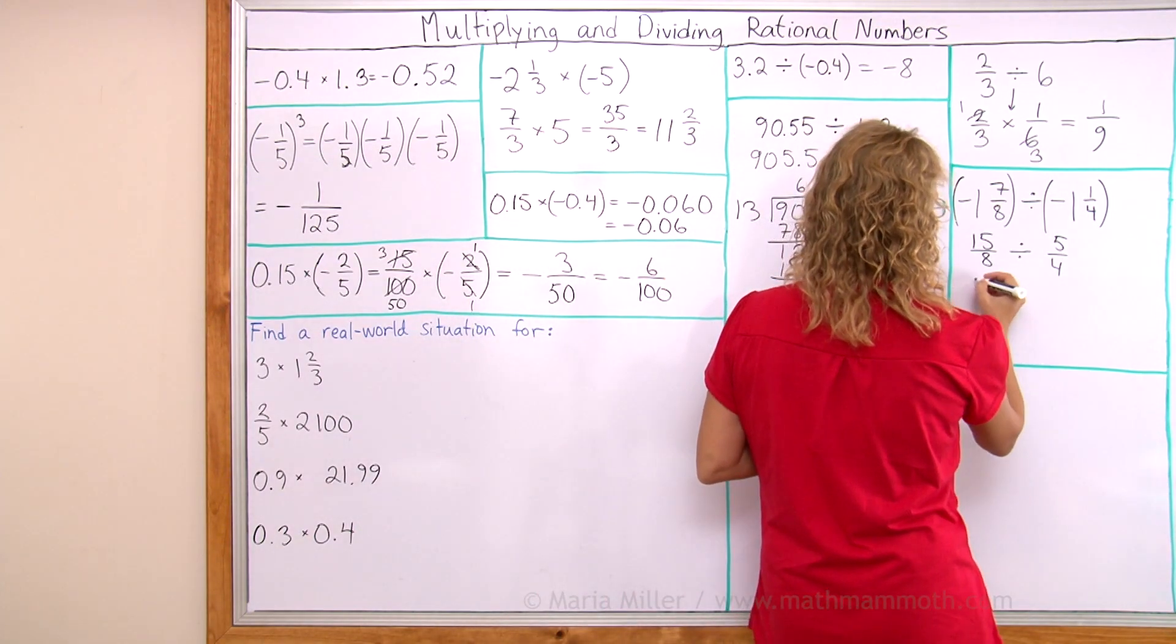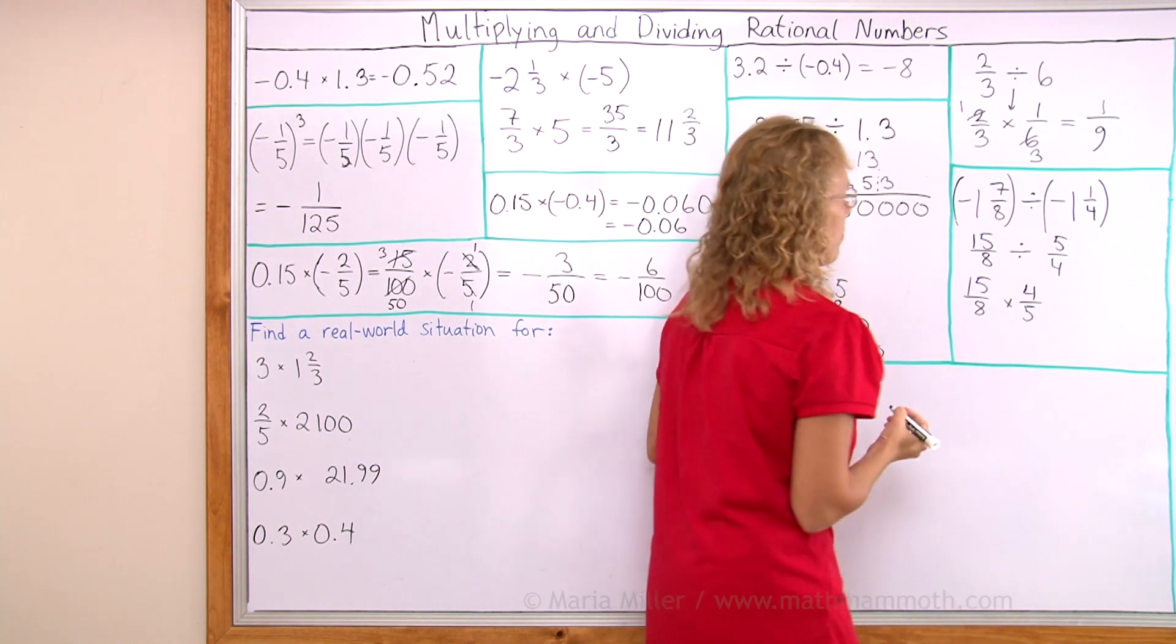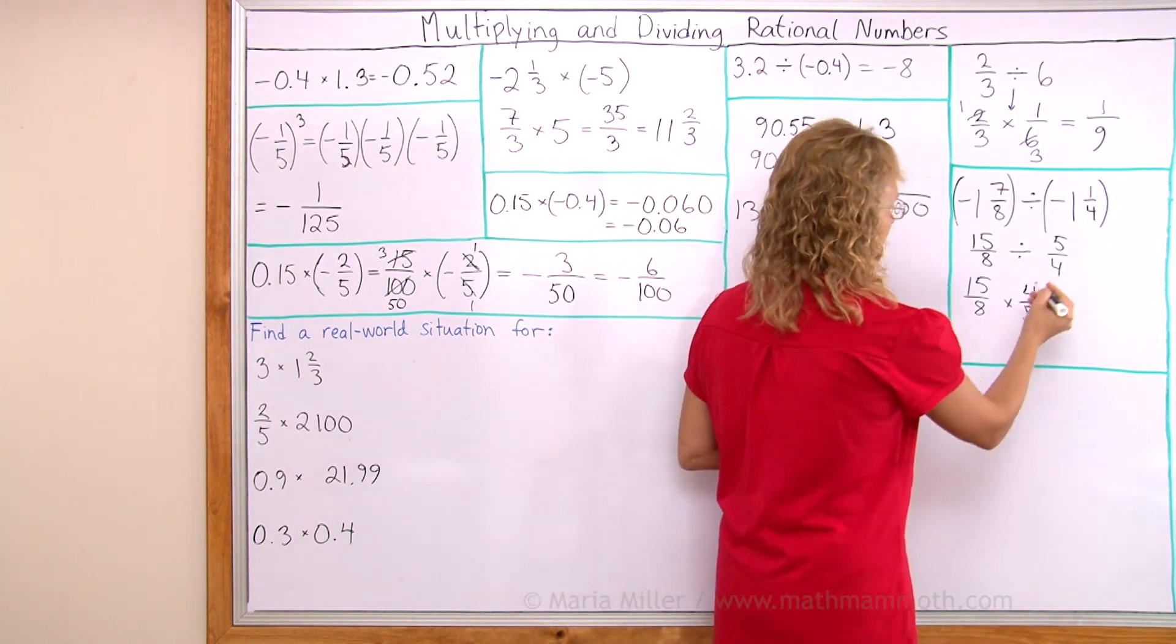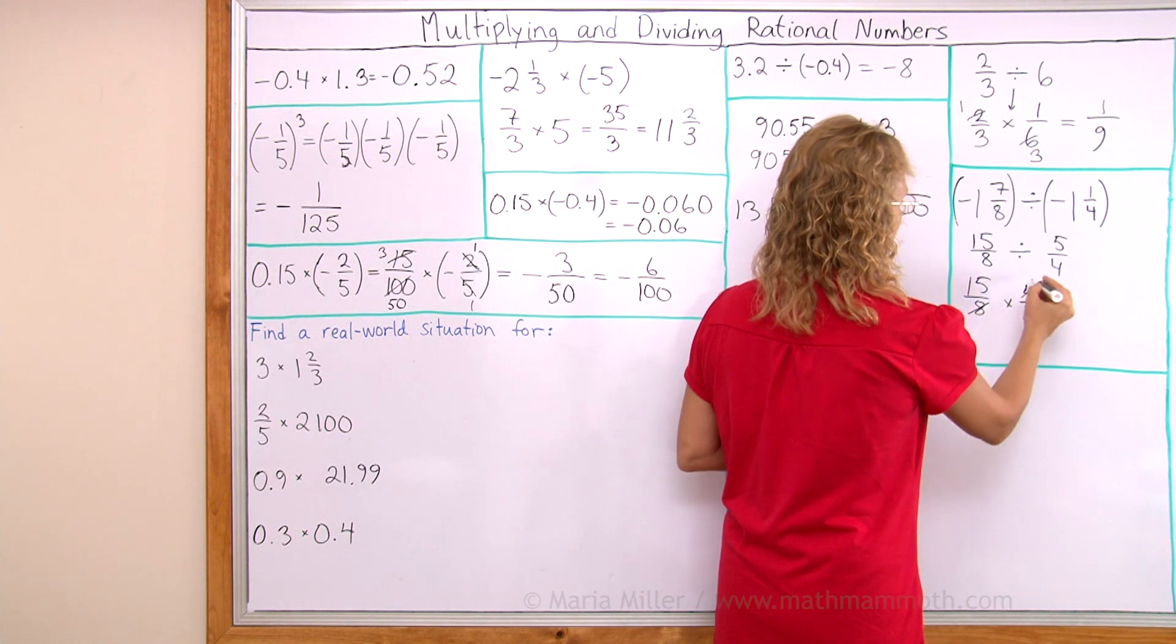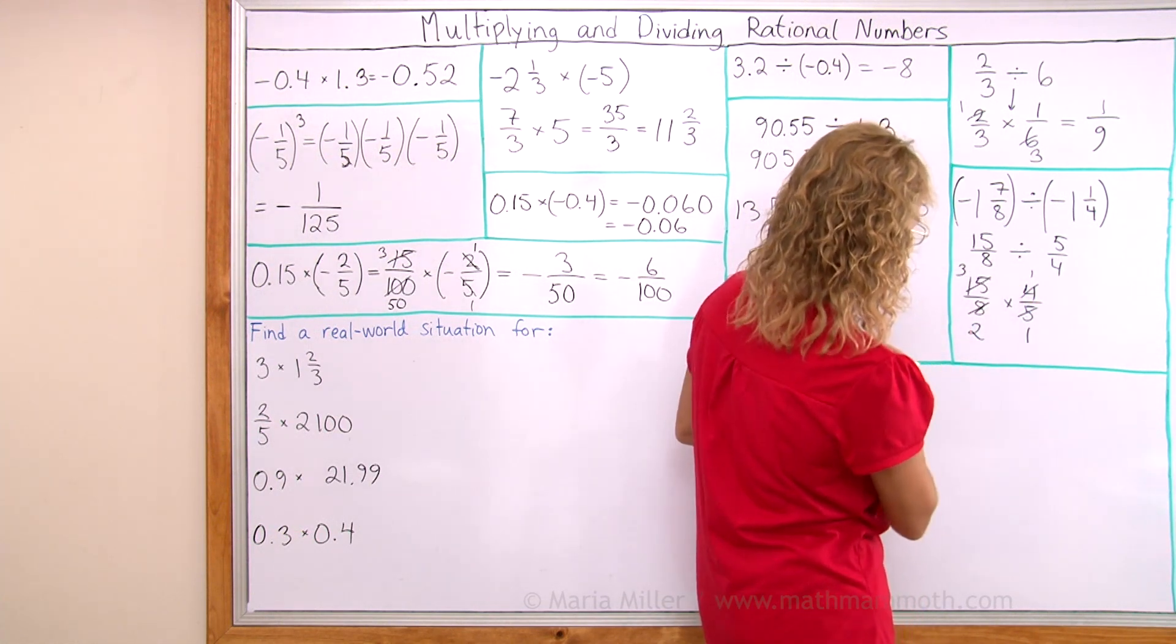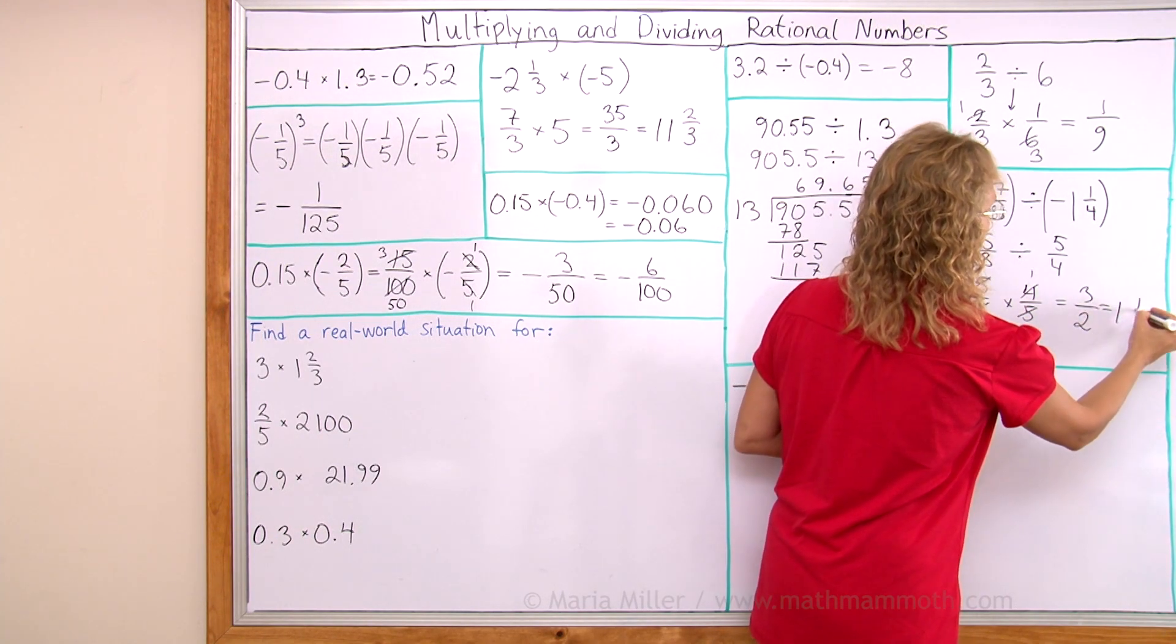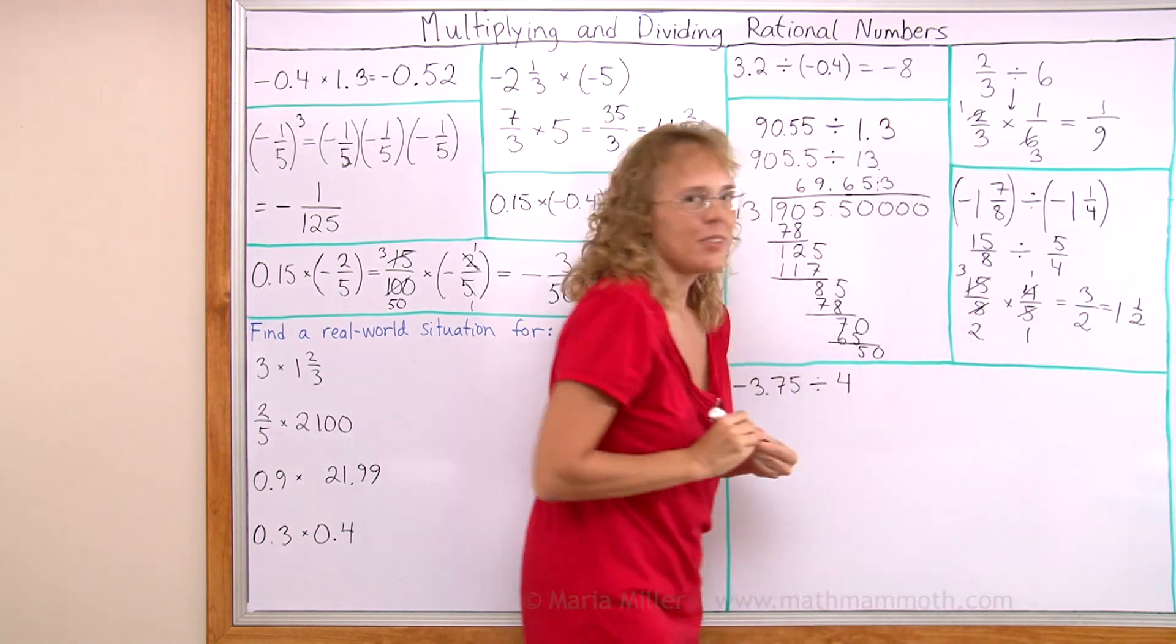And now we change it into a multiplication problem. 4 over 5. And here, nicely, I can again simplify before I multiply. Three here, one here. And all that is left is 3 over 2, or 1 and a half. A very simple answer.